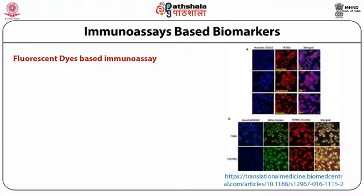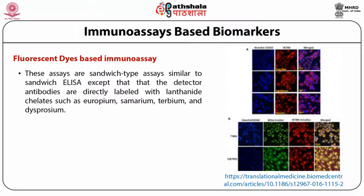Fluorescent dye-based immunoassay, as the name indicates, is based on tagging with fluorescent dye. These are sandwich-type assays similar to sandwich ELISA; the only difference is how detection is done. The antibodies are coated with fluorescent dyes such as lanthanide chelates — europium, samarium, terbium, or dysprosium — and these fluorescent dyes can be detected after proper washing.